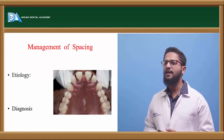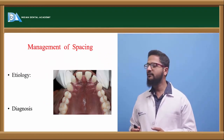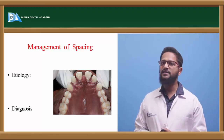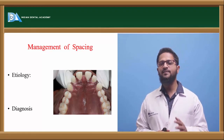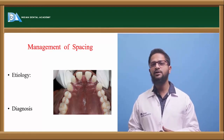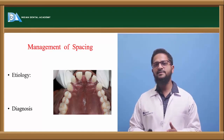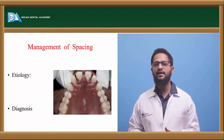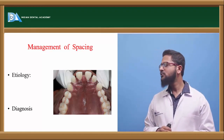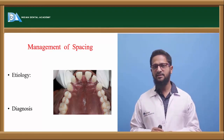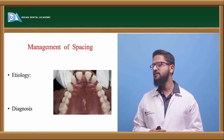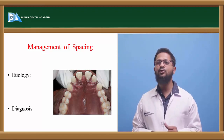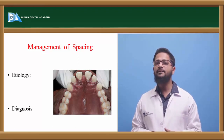Next is management of spacing. Spacing is also one of the most common manifestations of Class I malocclusion. Spacing is also present in the form of transient malocclusion in deciduous dentition. Deciduous dentition is characterized by the presence of physiological spacing, which is a positive sign for proper eruption of permanent teeth. But sometimes spacing is also present because of the indulgence of the patient in abnormal habits like thumb sucking, tongue thrusting, or mouth breathing habit.